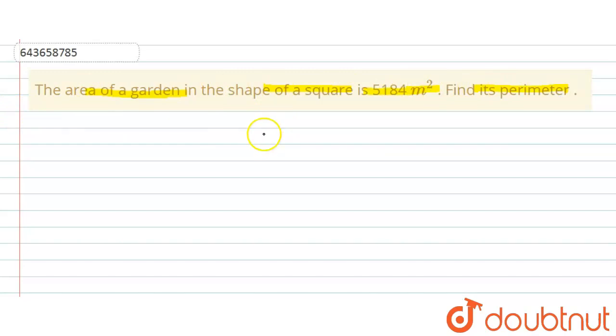So here, given as area of square garden which is equal to 5184 meter square. As we know that, my dear students, area of square can be calculated by the side square.